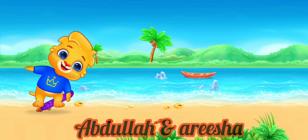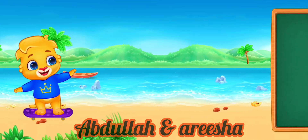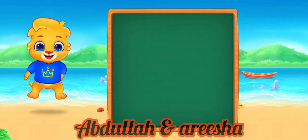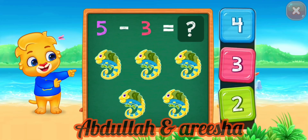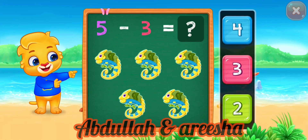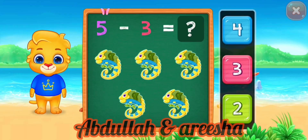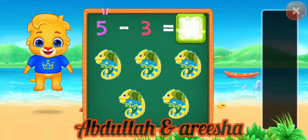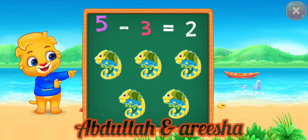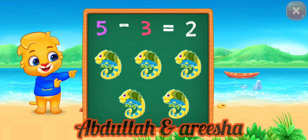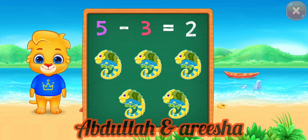Peekaboo! 5 minus 3 is equal 2. 2! Woohoo! 5 minus 3 equals 2.